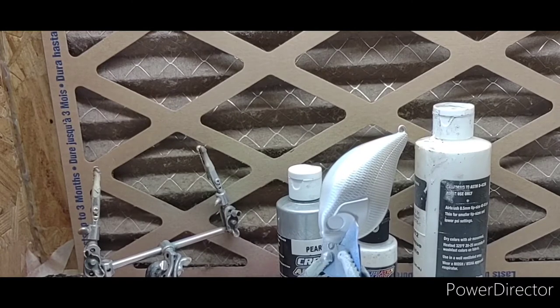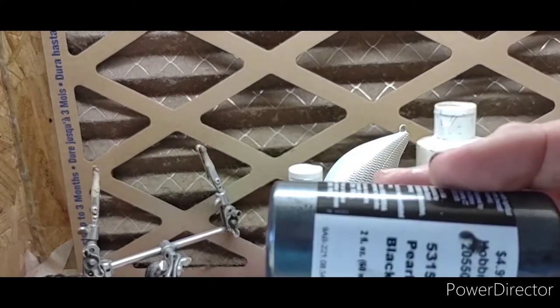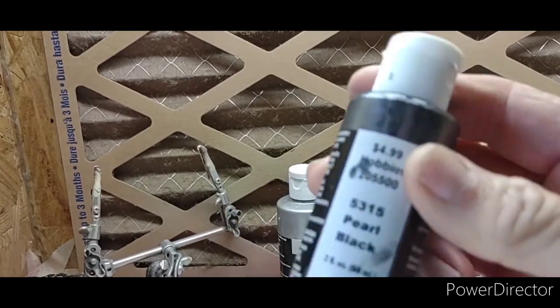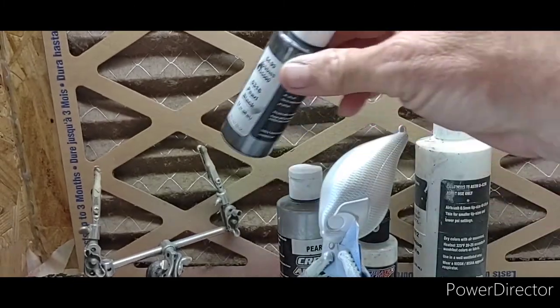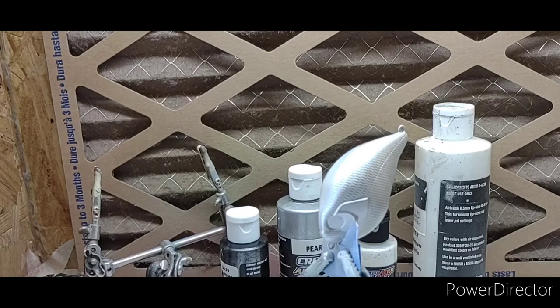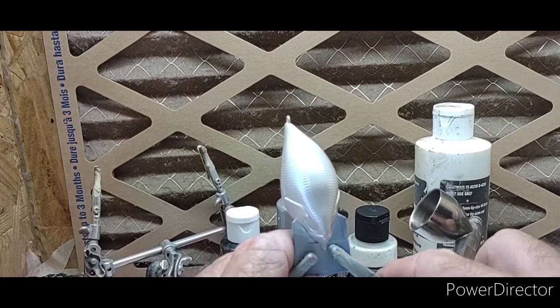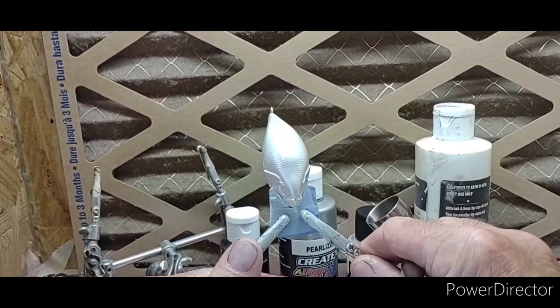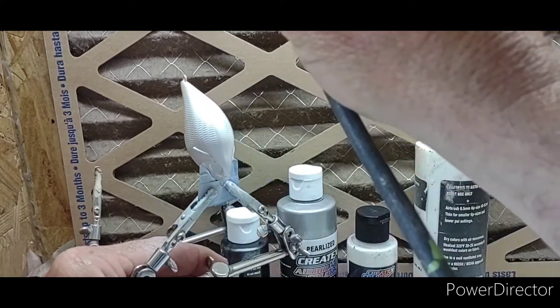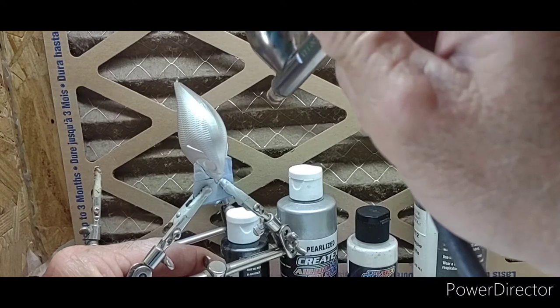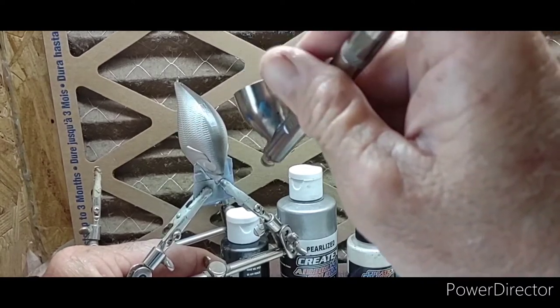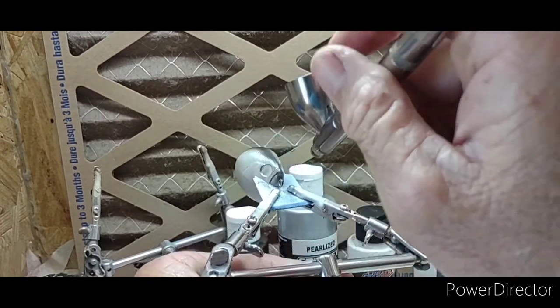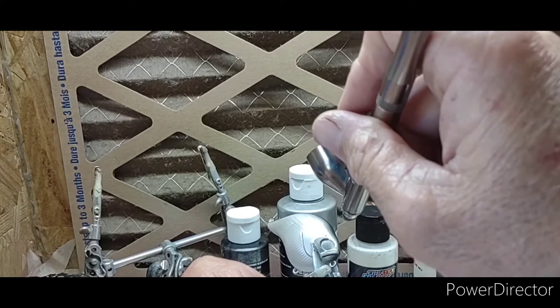I'm gonna clean out my airbrush and I'll be right back. All right then our last color is gonna be this pearl black, Createx pearlized pearl black and it is 5315. Then what we're gonna do is we're just gonna go right down his spine with this. So I'm gonna duck him down just a tad so I can tilt him, but we're just gonna go right down the center of his back and just let the overspray carry over. And then we're gonna do the nose and then we're gonna do right around the eyes.